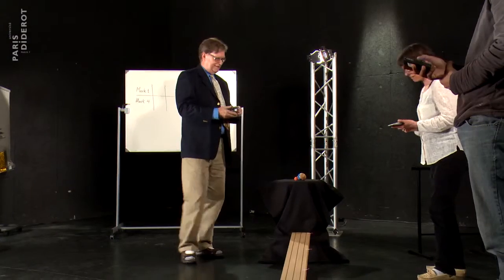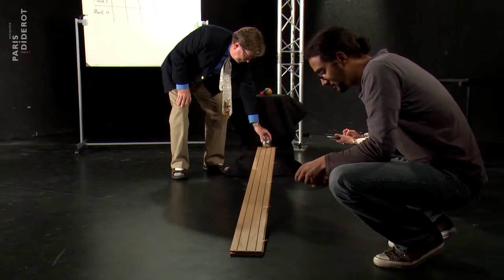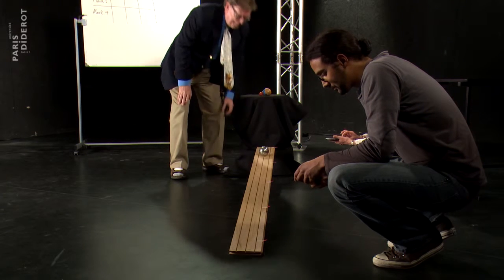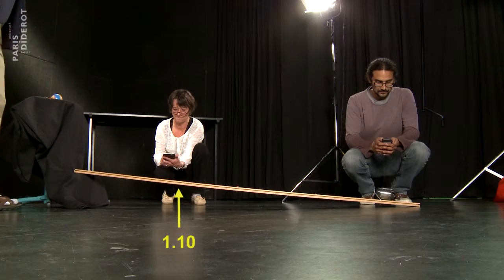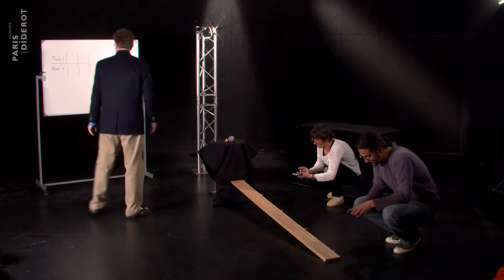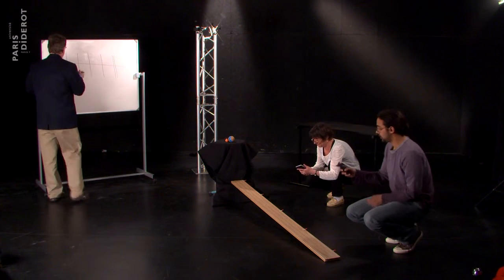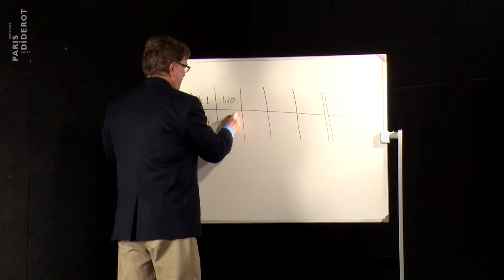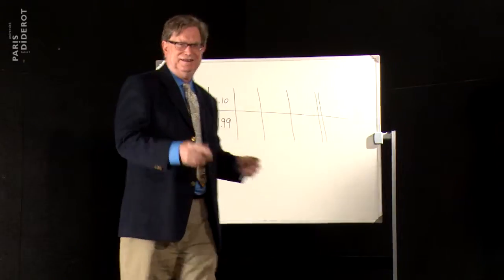So are we ready? Ready. Okay, I'll count down from three. Three, two, one, zero. Okay, what were your times? One thirty-three. Very good. You're not cheating, are you? This is the correct answer. All right.